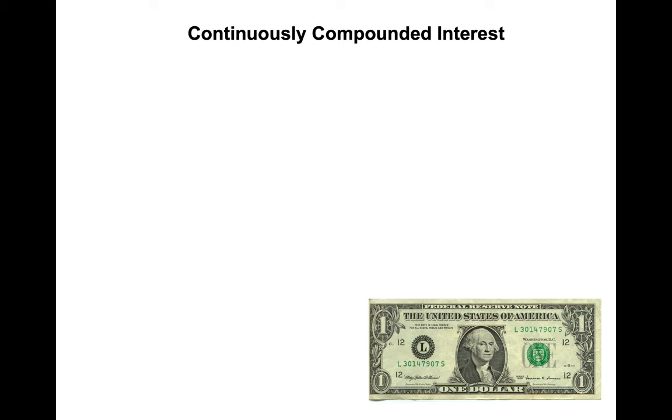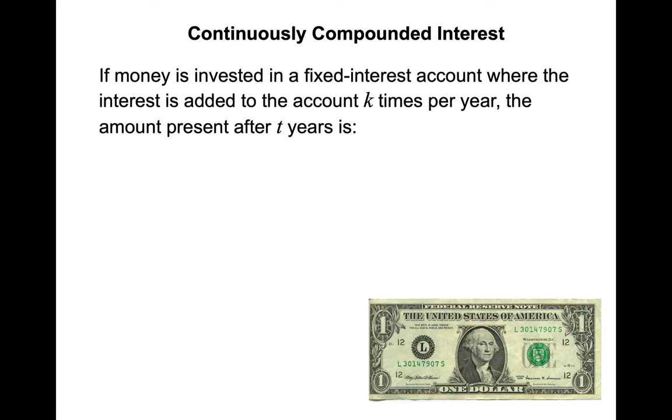Continuously compounded interest is another thing. We talked about compounding interest last year in college algebra. So if money is invested in a fixed interest account where the interest is added to the account k times per year, the amount present after t years is A(t) = A₀(1 + r/k)^(kt), where A-naught represented the initial amount that you deposited. And this k, if it was monthly, k would be 12. If it was daily, k would be 365. If you knew what those values were, you can just plug them in.